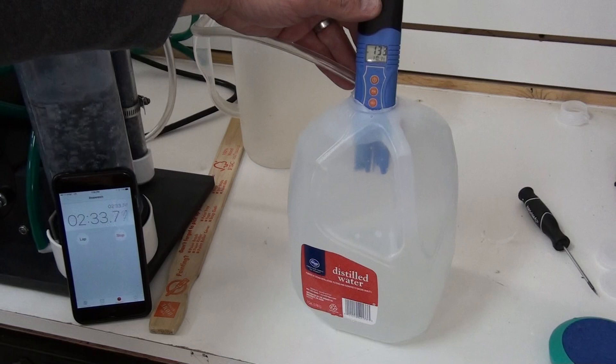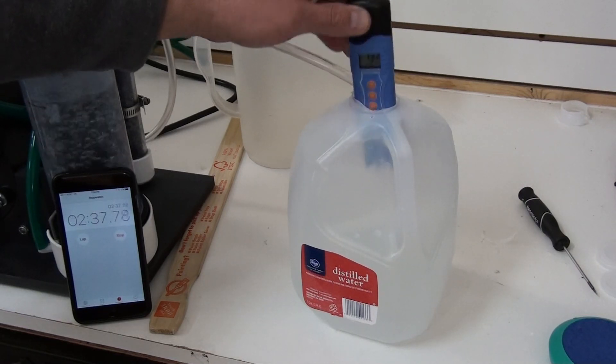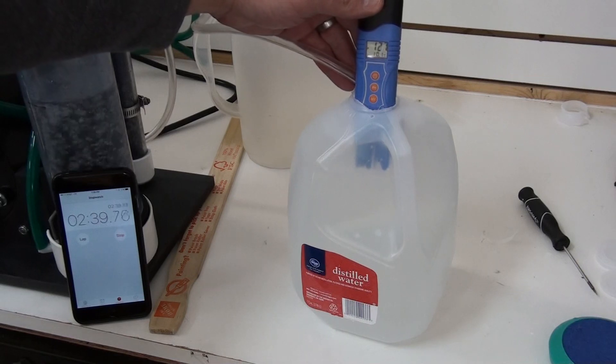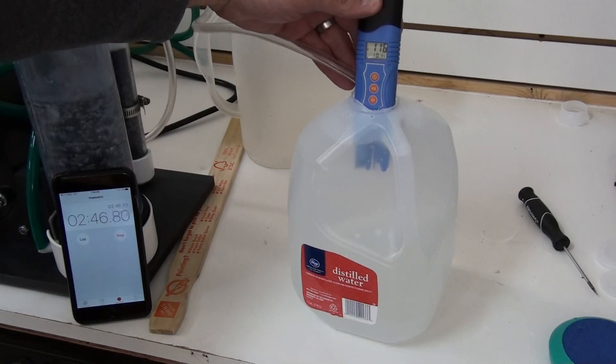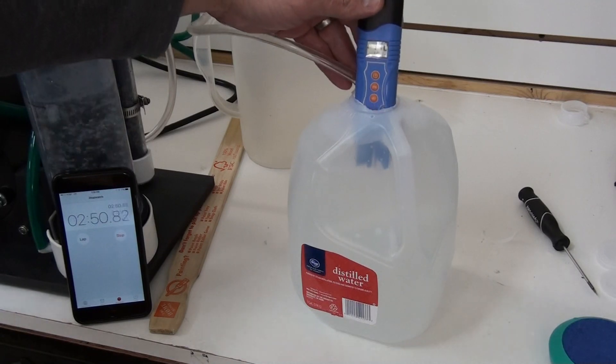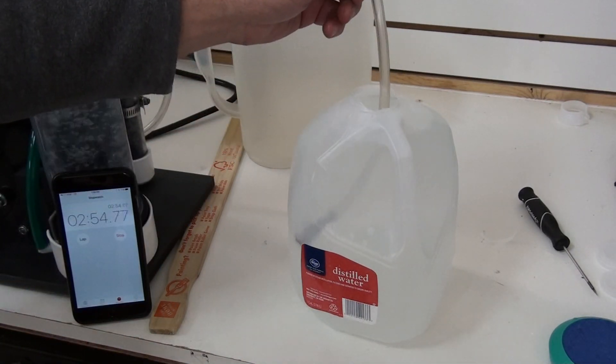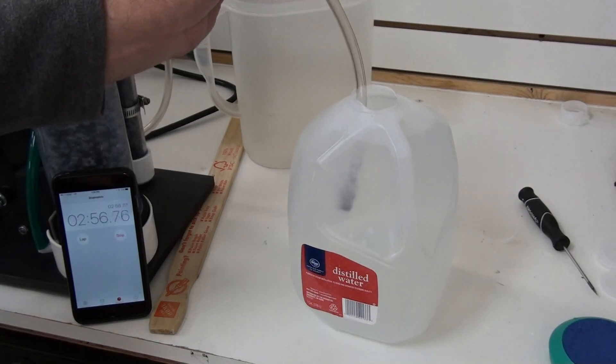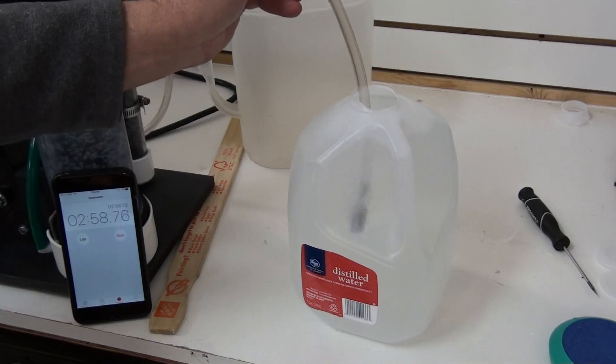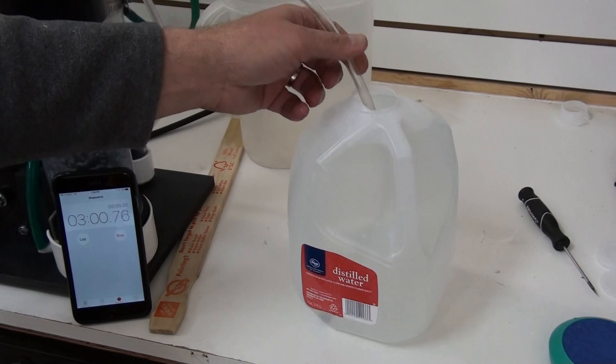1:30, just passing under 1:30, that's positive 1:30, just over 2 minutes, 45 seconds. On the end of this hose is a 2 micron stainless steel diffuser.